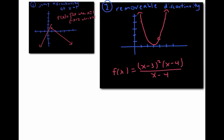This kind of discontinuity is called removable because you could get rid of it by plugging the hole — just by defining f to have an appropriate value when x equals four. In this case, you'd want f(x) to be the same when x is not equal to four, but you'd want it to have the value of one when x equals four. That would amount to plugging the hole and making it continuous.